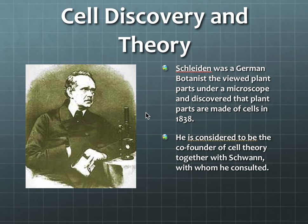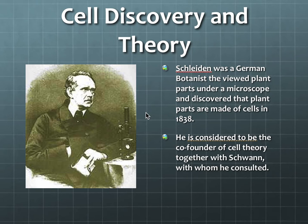Matthias Schleiden was a German botanist and he was looking at plant parts underneath the microscope. Now this is the beginning of the cell theory. There were three men that were instrumental in the cell theory, and that's who we're going to go over now. Schleiden was our first.